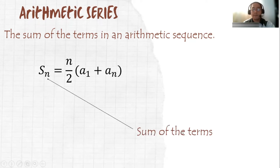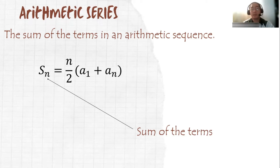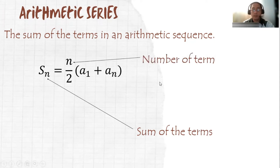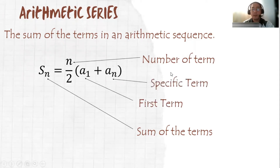S sub n stands for the sum of the terms. For example, we will be getting the first term to the tenth term — what is the sum of the first term to the tenth term? N is the number of terms, a sub 1 is the first term, and a sub n is the specific term.